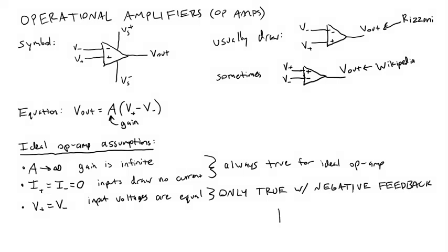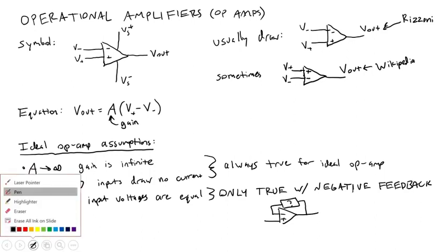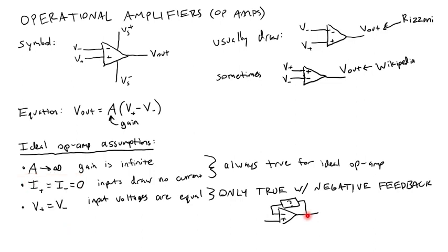What we mean by negative feedback is we have something—I don't necessarily care what, it could be a wire, it could be a capacitor, it could be a resistor—connected between that output and the negative or inverting input terminal. This assumption that V-plus equals V-minus is only true in this case where I have that negative feedback. It is not true in this case where there's no wire going back connecting the output to the input.